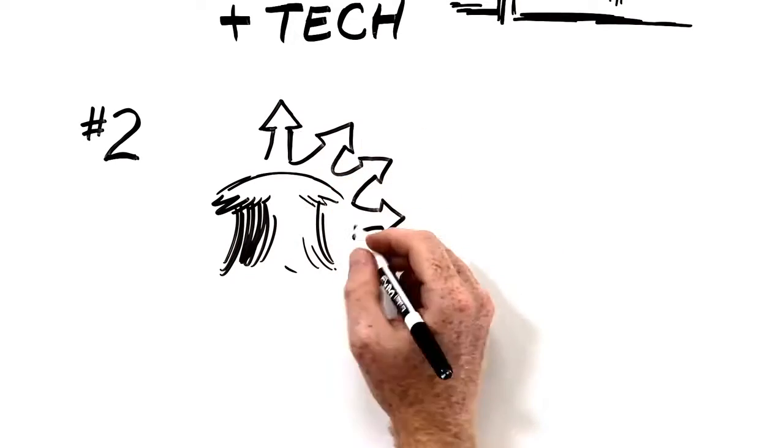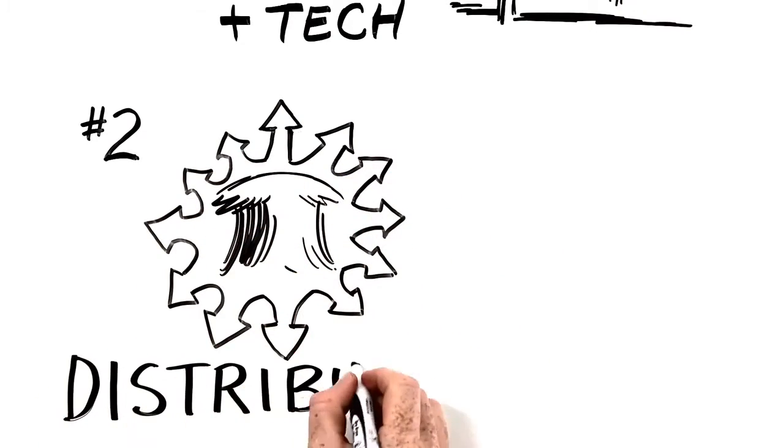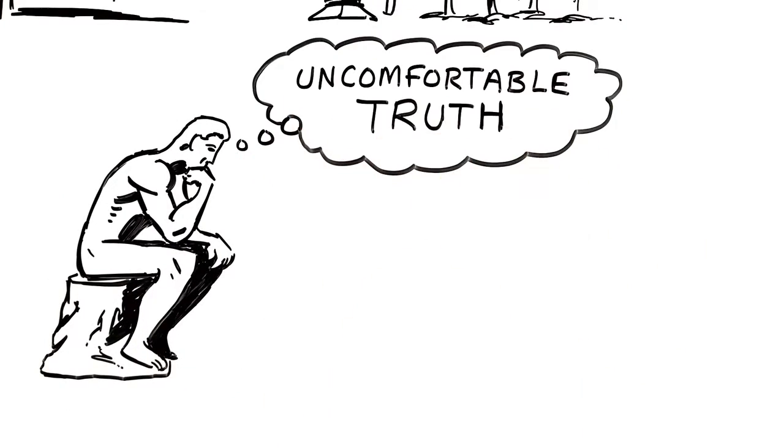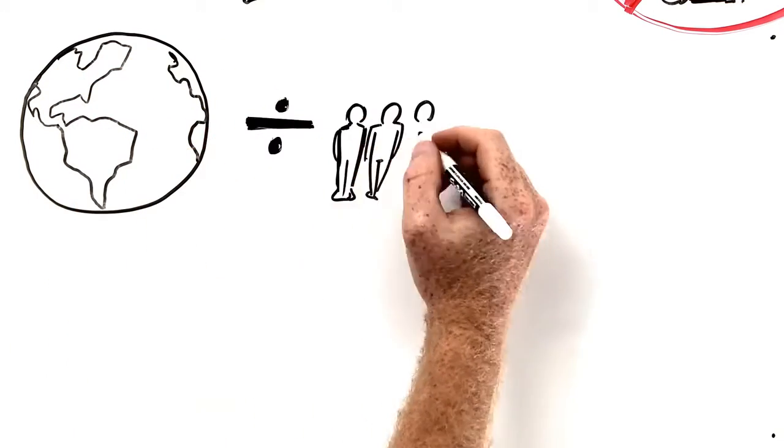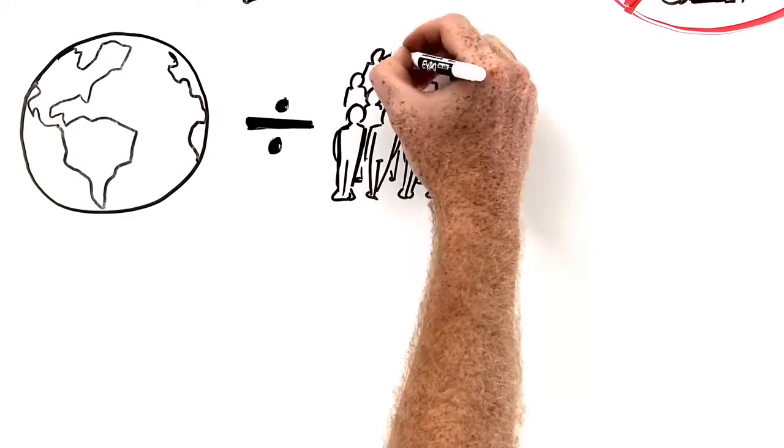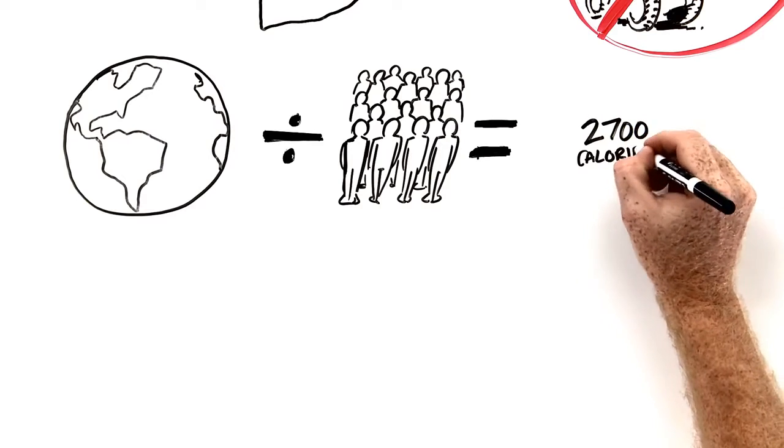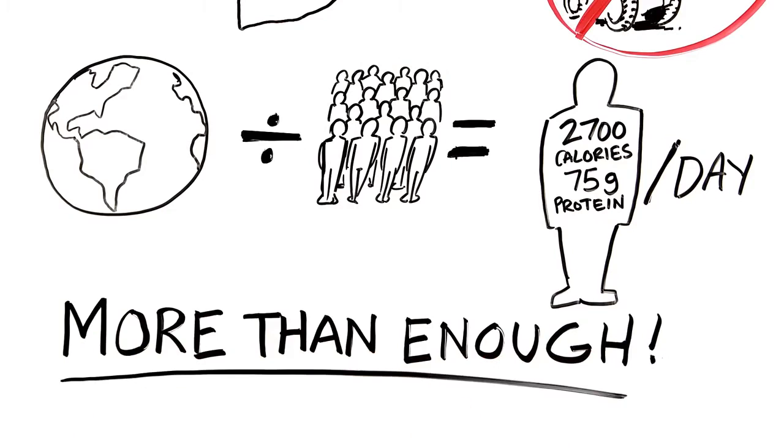And this is where the second strategy comes in. We must do a better job at distributing the food we've got. To develop this strategy, we need to consider an uncomfortable truth about today's food system. If you take all the food on the planet and divide it equally by all the people on the planet, there is plenty. About 2,700 calories per person per day and 75 grams of protein per person per day. That's more than enough.